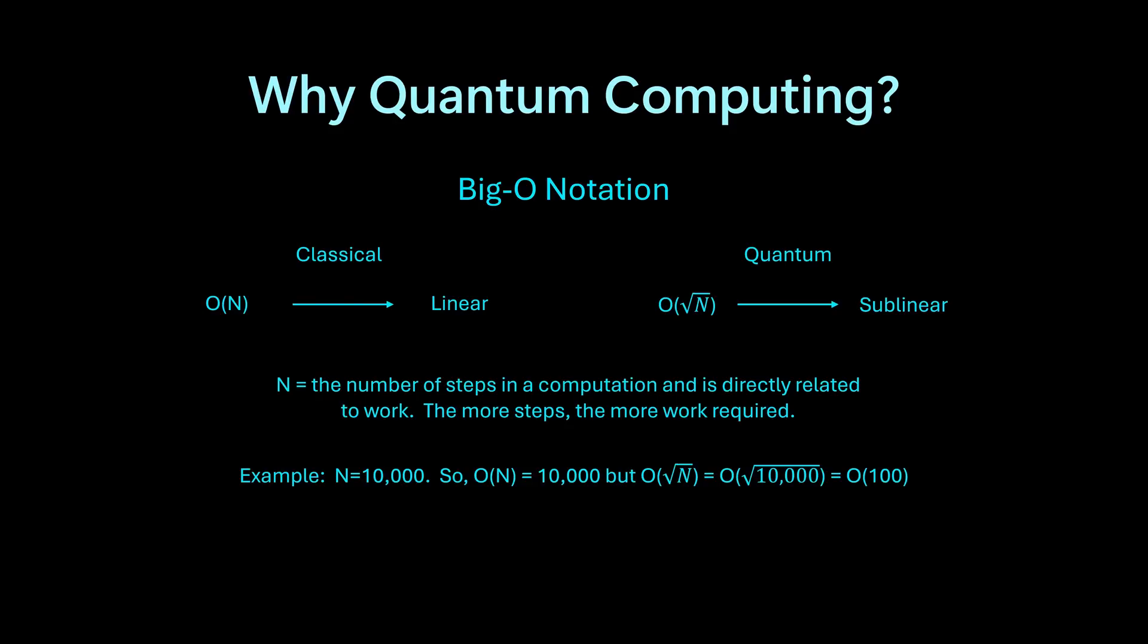An example would be n steps for n inputs will result in O(n) steps. Certain quantum algorithms operate at roughly square root of n steps. So from the example below, given an algorithm with 10,000 inputs, a classical system will run the algorithm in 10,000 steps while a quantum system will run that same algorithm in 100 steps.